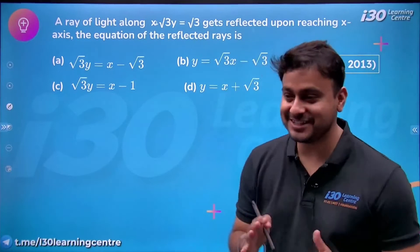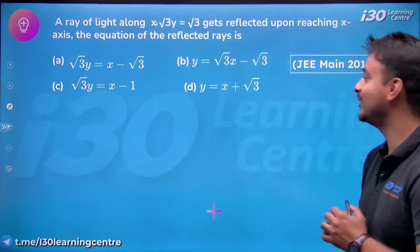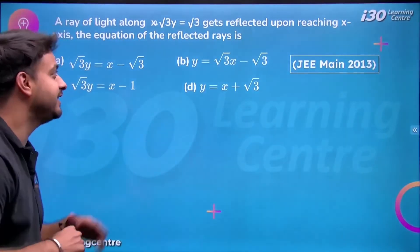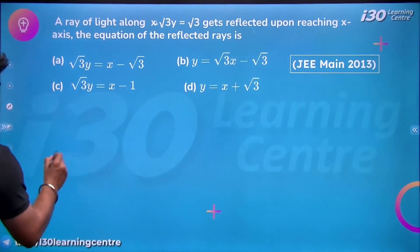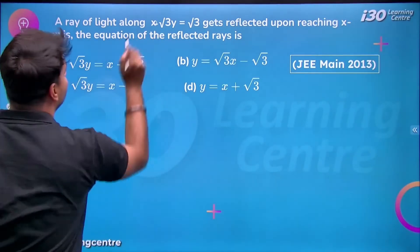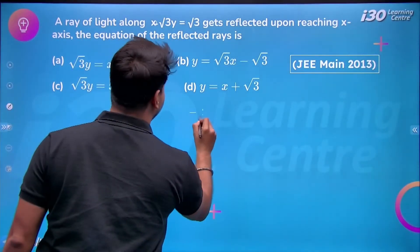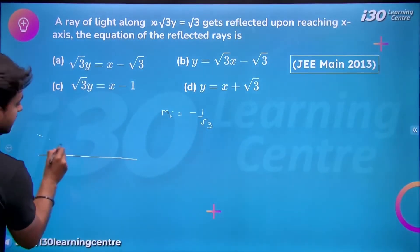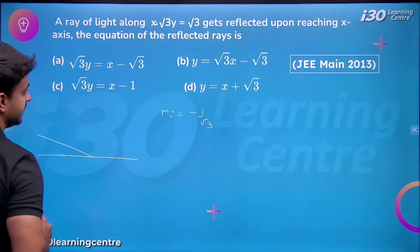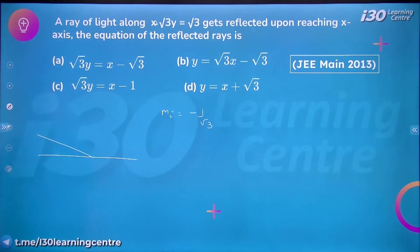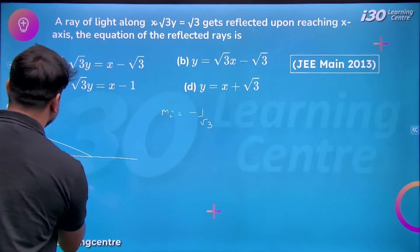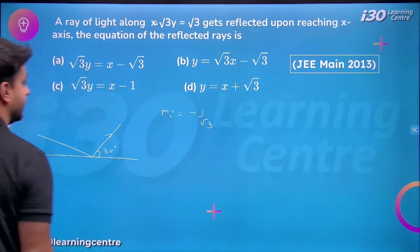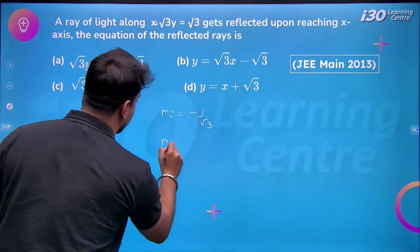We have a very basic question asked in JEE Mains 2013: a ray of light along x + √3y = √3 gets reflected on the x-axis. If we talk about the slope, it's -1/√3. That is my slope of incident ray. The incident ray is making -1/√3, so it's making -30 degrees. Obviously your reflected ray will make +30 degrees, so the slope of reflected ray will be 1/√3.